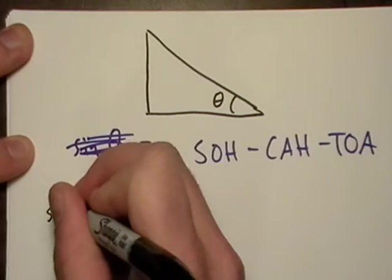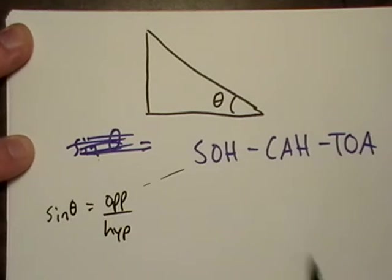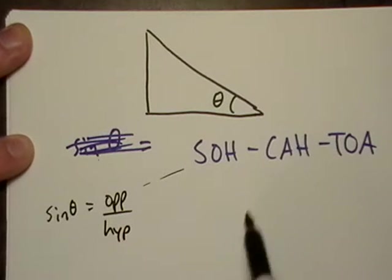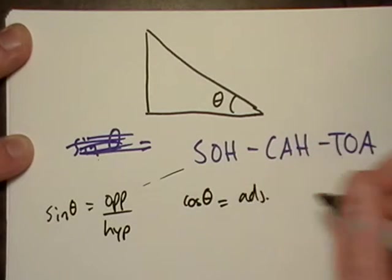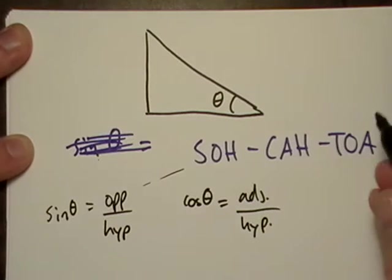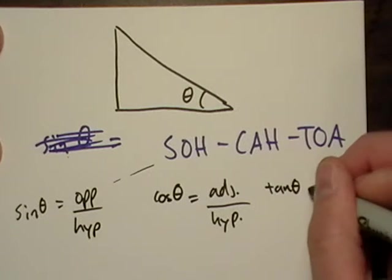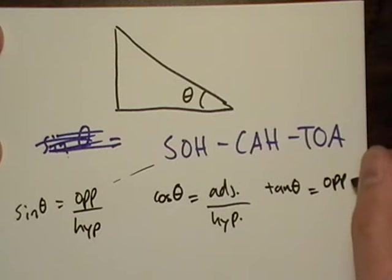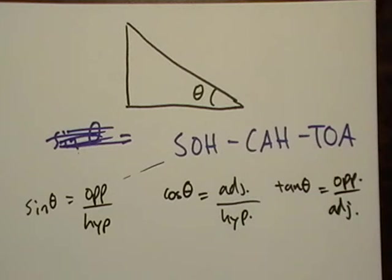SOH means sine equals opposite over hypotenuse. CAH means cosine theta equals adjacent over hypotenuse. TOA means tangent theta equals opposite over adjacent. Go ahead and write those down and keep them handy — we'll be using them pretty quickly.